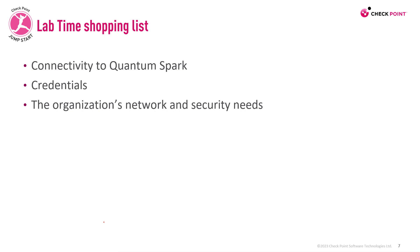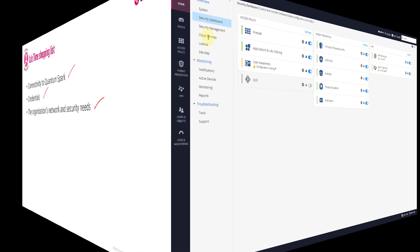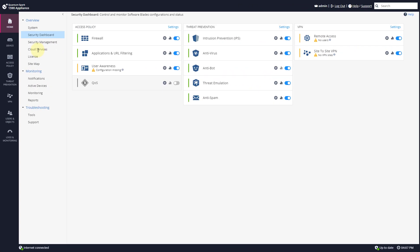To utilize this tool yourself, make sure you have connectivity to Quantum Spark, the right credentials, and an understanding of the organization's network and security needs. For example, if your organization uses web conferencing applications, you would want that service bypassed. However, in some organizations streaming is forbidden from within the corporate network, so you'd want to block that instead.